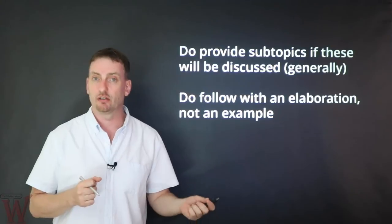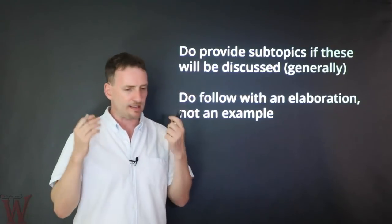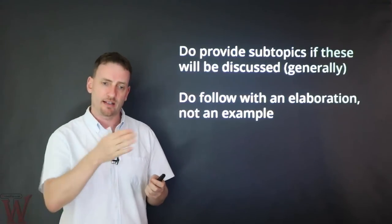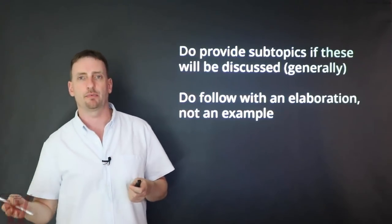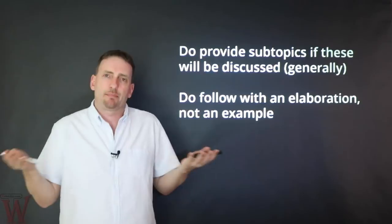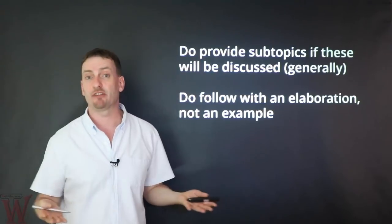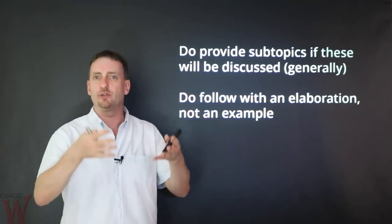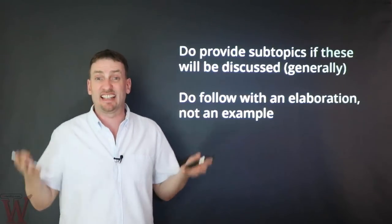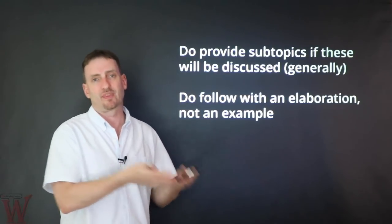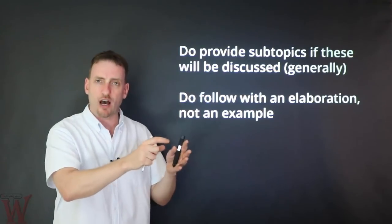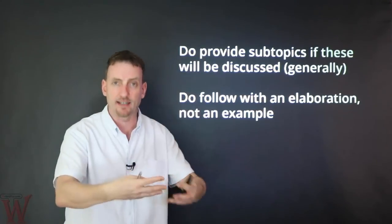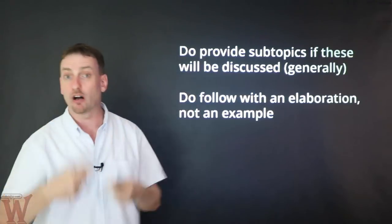Follow with an elaboration, not an example. I see many times a topic sentence that's kind of long, and then the next sentence begins with 'for example.' But example of what? You haven't elaborated on anything, you haven't explained anything. You've only introduced the focus of the paragraph — there's nothing to give an example of yet. Give your topic, expand, elaborate, support it, then give me an example to put it all together.